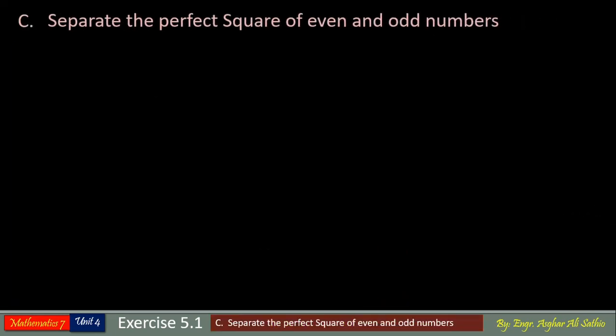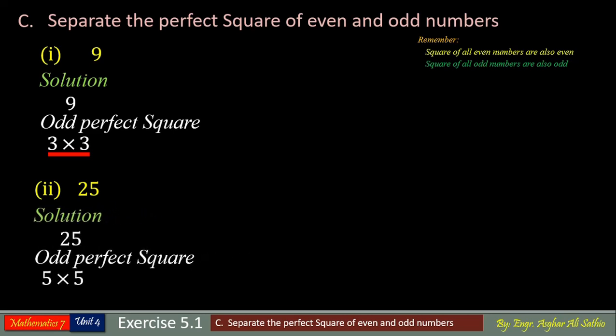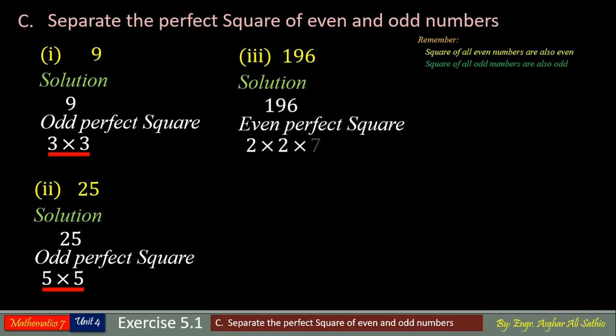Now question C of exercise 5.1 says to separate the perfect square of even and odd numbers. Problem number 1: 9. Here we have to only separate the square of even and odd numbers. Always remember numbers exactly divisible by 2 are even numbers, and square of all even numbers are also even. And numbers not exactly divisible by 2 are odd numbers, and square of all odd numbers are also odd. Now come to problem number 1: 9 is an odd perfect square because it has 0, 3, and 9 in the unit's place.